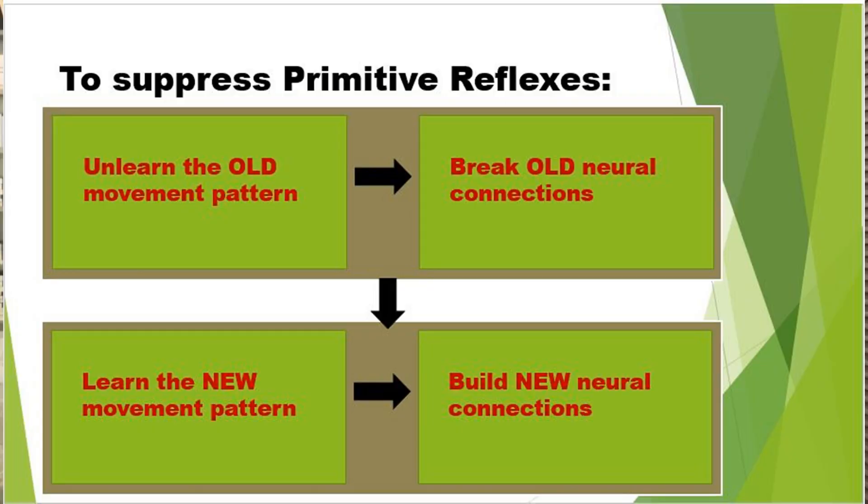We want to break the older neural connection that exists because of the primitive reflex, and build newer neural connections via new dendrites. To break this neural connection, we need to do other movements which are usually opposite to those occurring in the primitive reflex, and build new connections. To unlearn the old thing and learn the new thing will take some time, so each exercise needs to be performed for more than four to six weeks to see visible results in kids. Watch the upcoming videos to learn the treatment strategies for dealing with primitive reflexes.